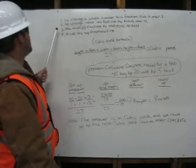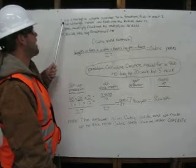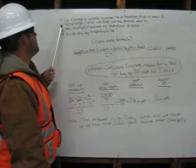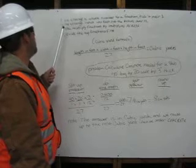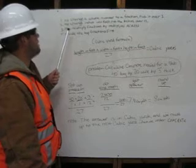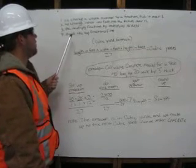We have four steps. First step, to change a whole number to a fraction, put it over one. Second, to change inches into feet, put the inches over twelve. Third, you multiply fractions by multiplying across. Fourth, divide the top fractions first.